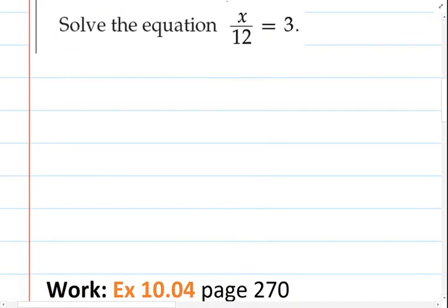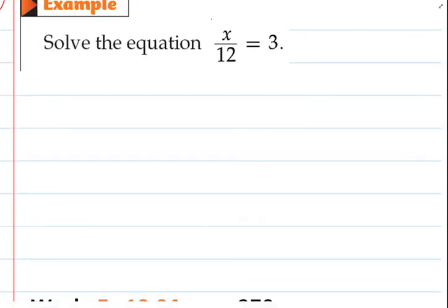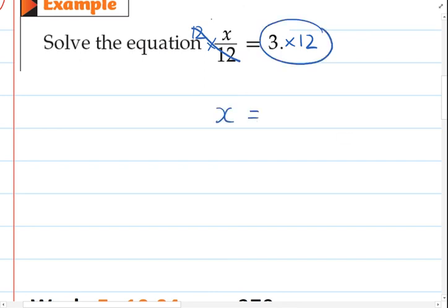The next example, we've got to look at x and see what's being done to it. So here, x is being divided by 12. So we've got to think to ourselves, what's the opposite of dividing? Well, that's timesing. So we're going to times by 12 on both sides. And so that 12 and divide by 12 cancels each other out, and we're just left with x. And on the other side, we've got 3 times 12, which is 36.